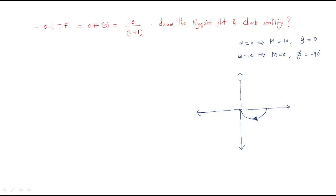The direction of the polar plot curve is like this. After drawing the polar plot, the second step is to draw the mirror image of the polar plot. The mirror image curve flows like this. So this is the polar plot and this is the mirror image of the polar plot. We have the point minus 1 plus j0 marked here.